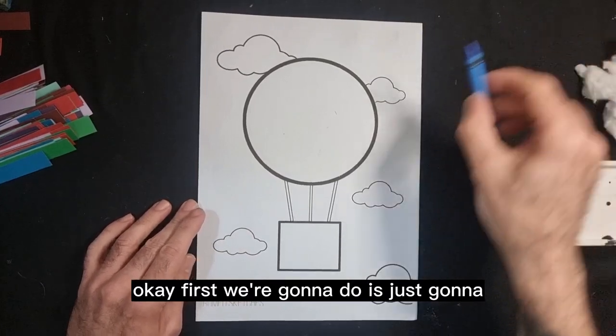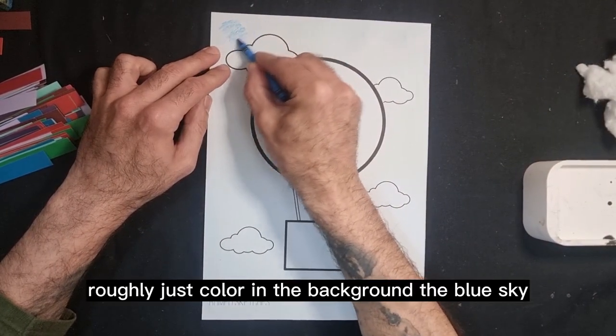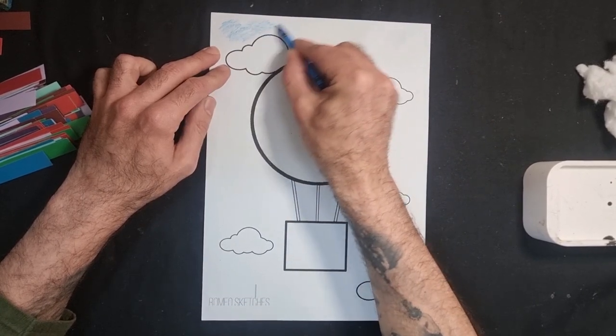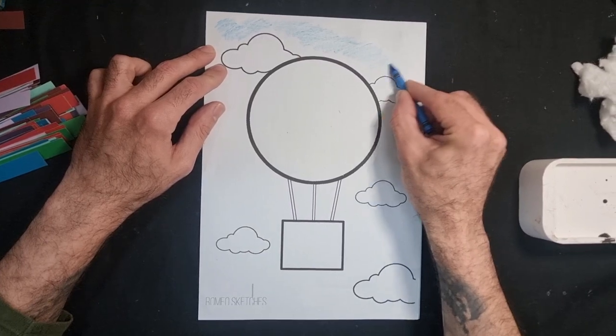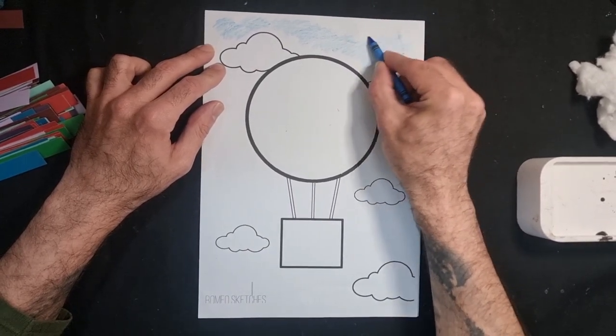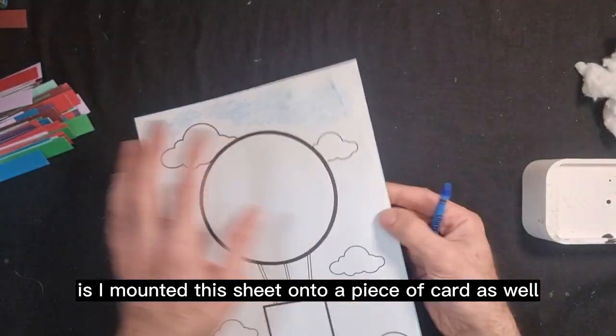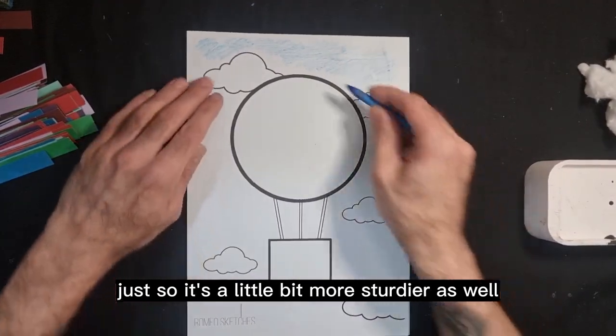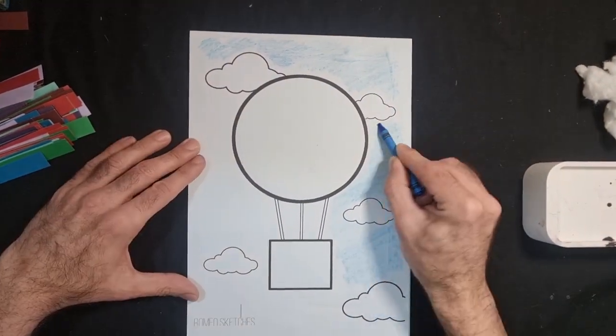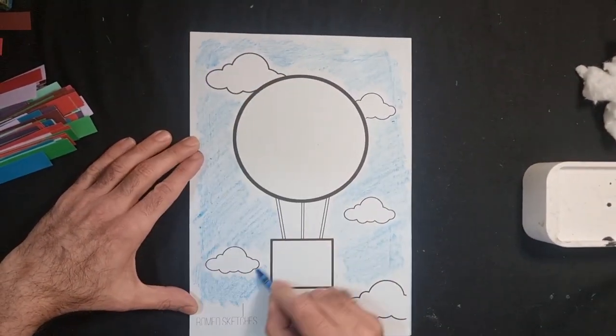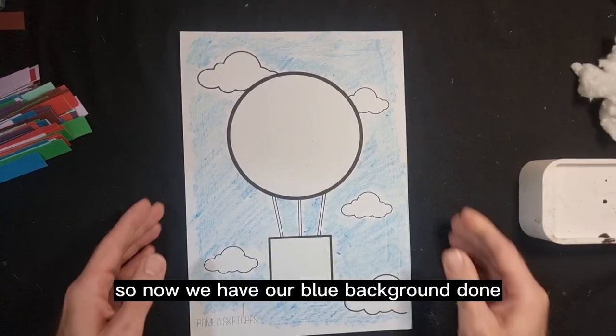Okay, first I'm going to do is just going to roughly just color in the background, the blue sky. I just found it's just easier with the crayon. Also what I did as well is I mounted this sheet onto a piece of card as well, just a little bit more sturdier. So now we have our blue background done.